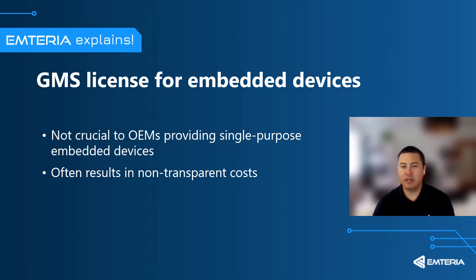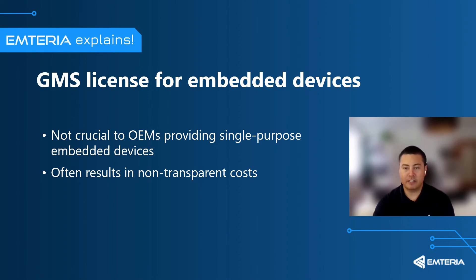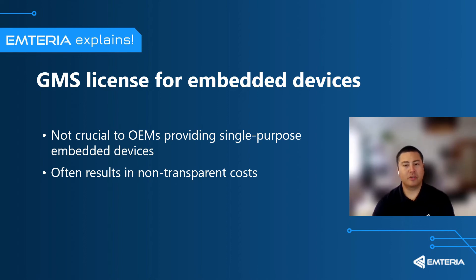However, they are not crucial to OEMs providing single-purpose embedded devices, who might not need the full functionality of GMS apps and APIs. The GMS license comes with non-transparent device provisioning costs, and the whole licensing process is time-consuming and enforces requirements upon OEMs that are not necessary for embedded systems. Furthermore, this creates a dependency on Google that is not required.